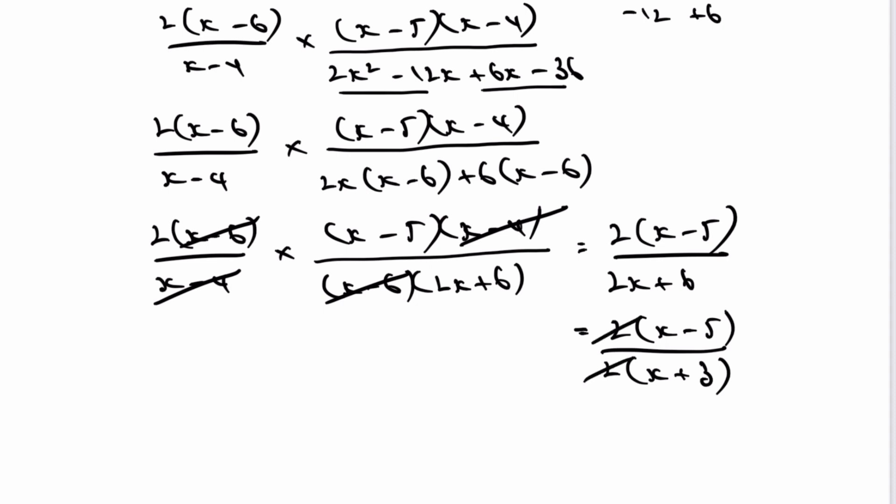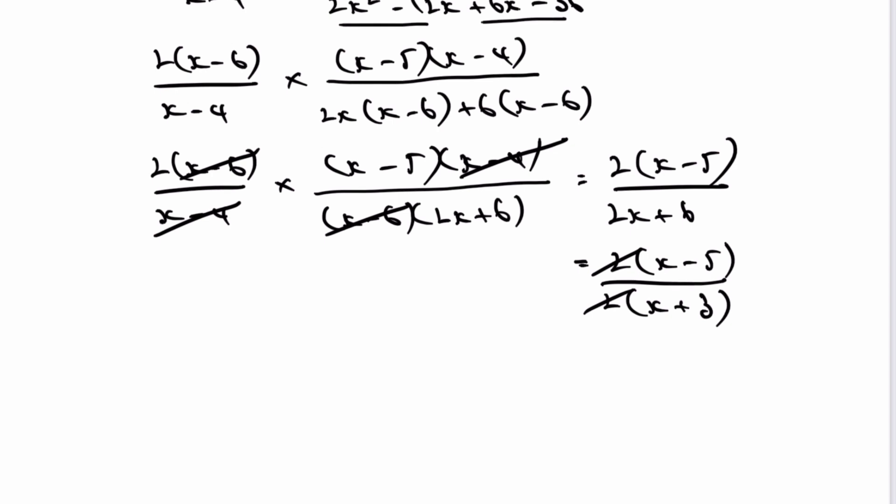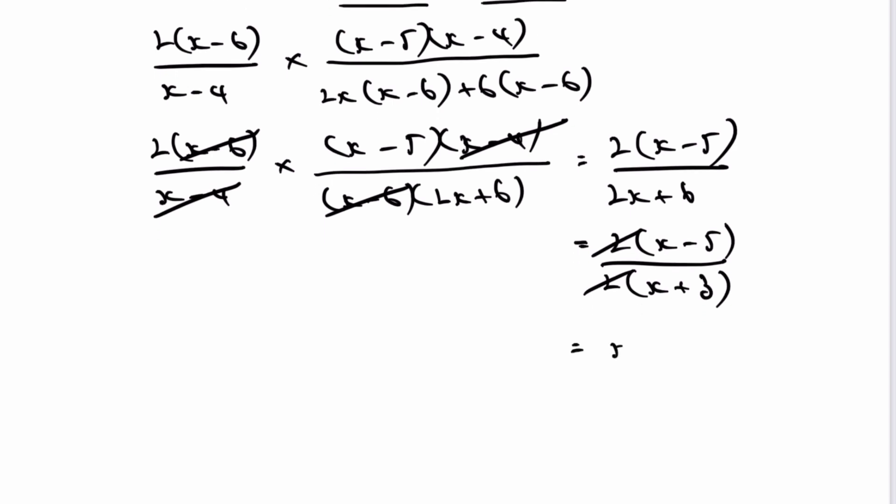So what I end up with is the ability to be able to divide top and bottom through by 2. And therefore, my final answer on this particular question is going to be x minus 5, all divided by x plus 3. And that would be the answer to this particular question.